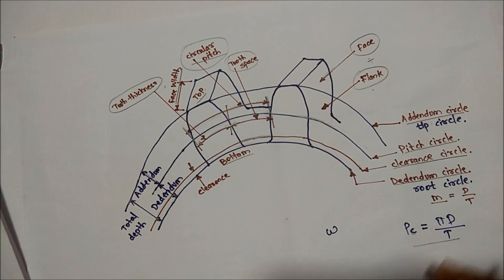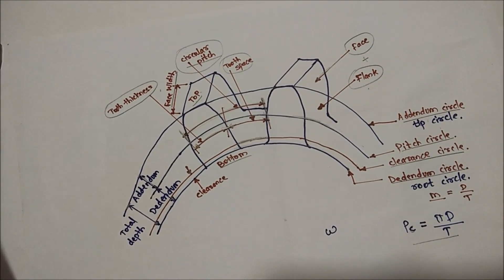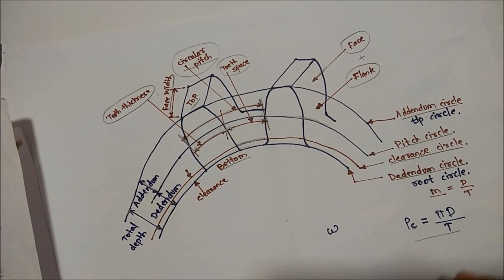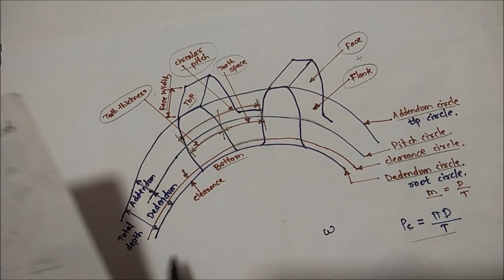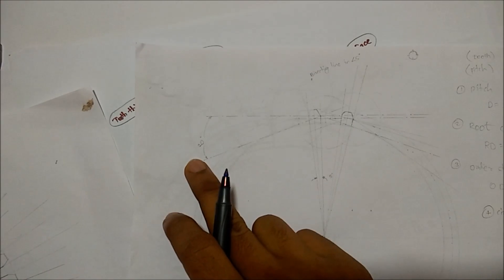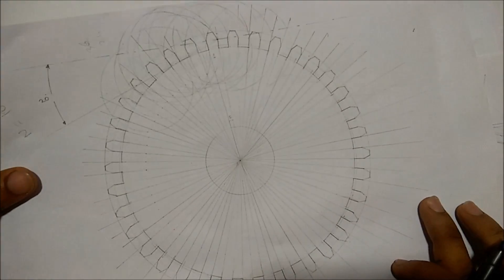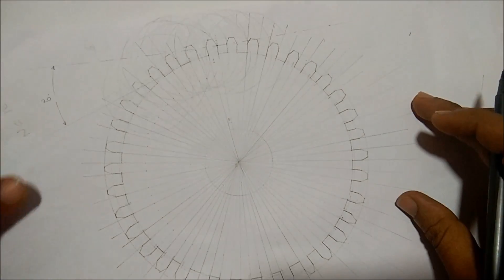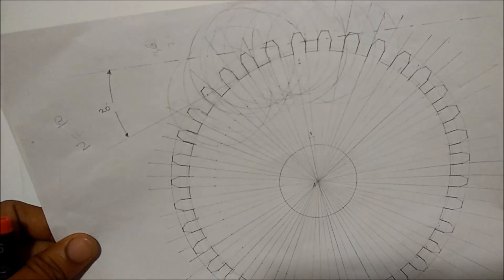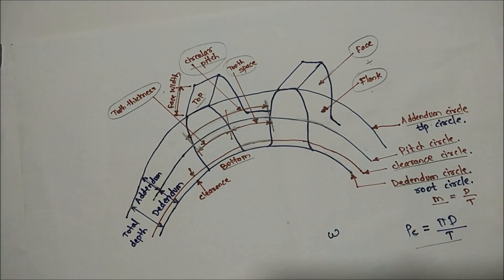In my next video, I will explain the detailed procedure for drawing an approximation of a spur gear — such as for 36 teeth or 24 teeth — using angles and calculations. Thanks for watching; please like and subscribe to my channel.